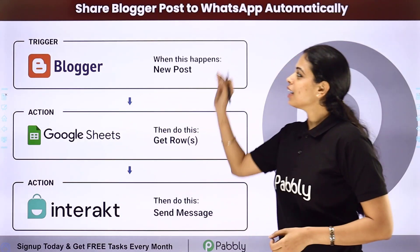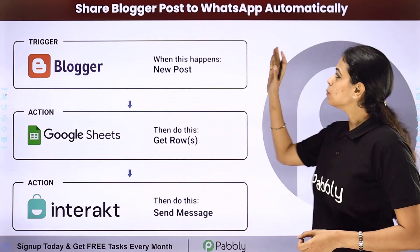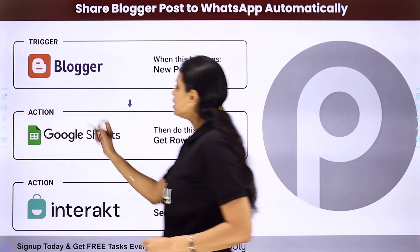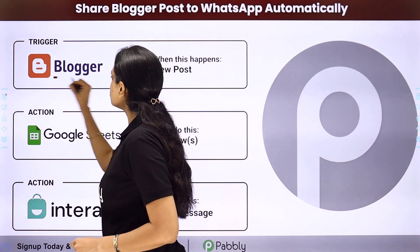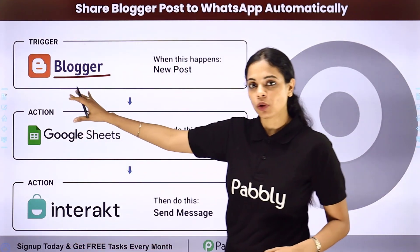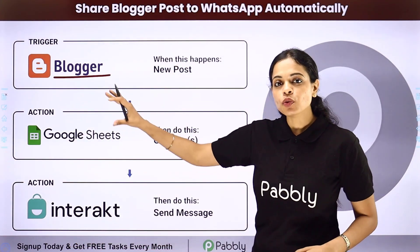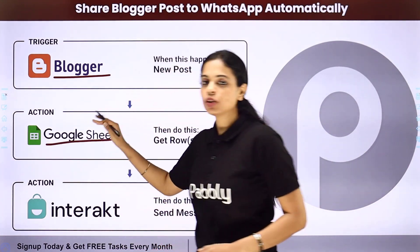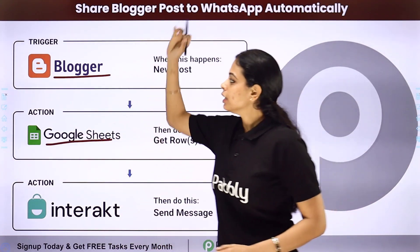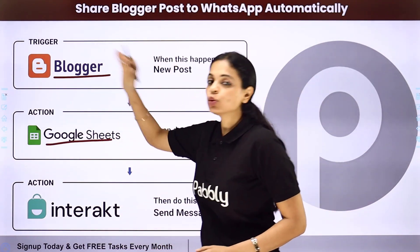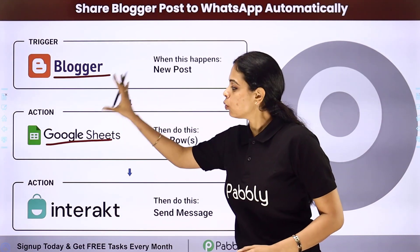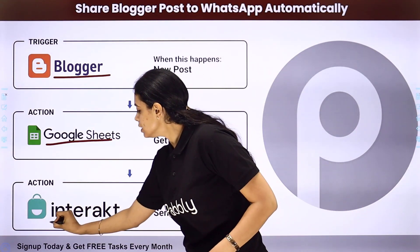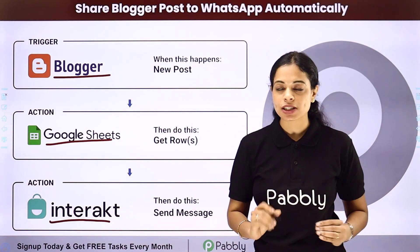In this video, we are going to see how to share a blogger post to WhatsApp automatically. Every time a new post is added to your Google Blogger, and you have a list of clients in your spreadsheet, you want this blog to be shared with all these people through WhatsApp. Here we are using Interakt to send WhatsApp messages.